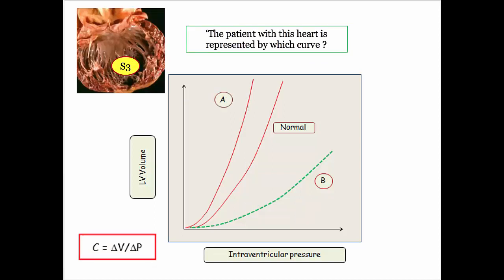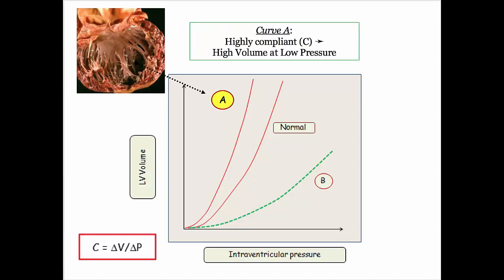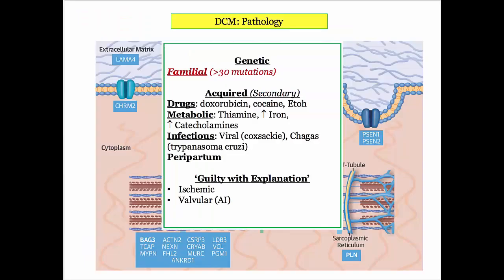The classic test question will include a patient with signs and symptoms of heart failure including an S3. You will be expected to choose the correct curve correlating with a compliant left ventricle. We will be grappling again with this concept when we discuss restrictive cardiomyopathy.